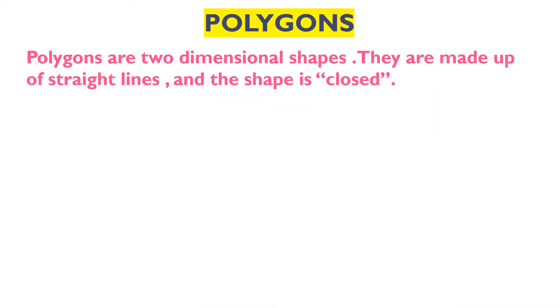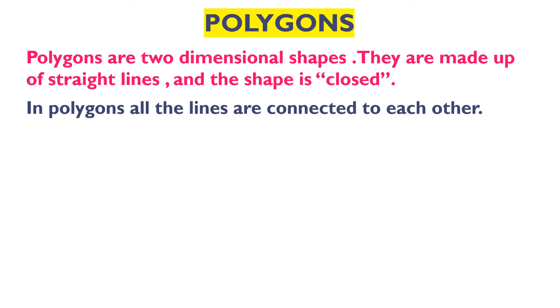Now, polygons. Polygons are two dimensional shapes. They are made up of straight lines and the shape is closed. In polygons all the lines are connected to each other. A polygon is made up of more than two line segments.